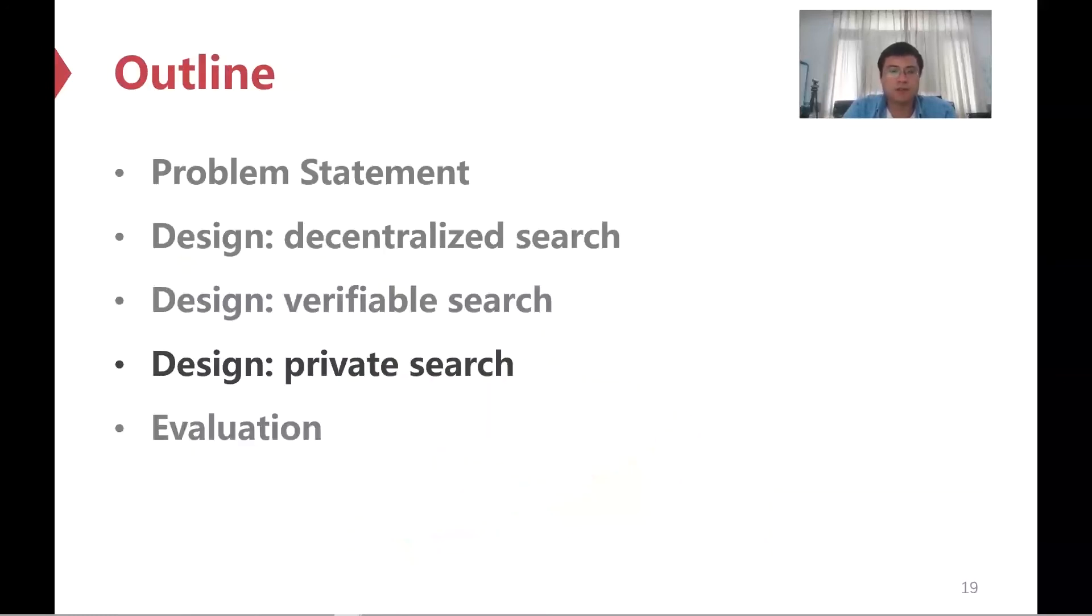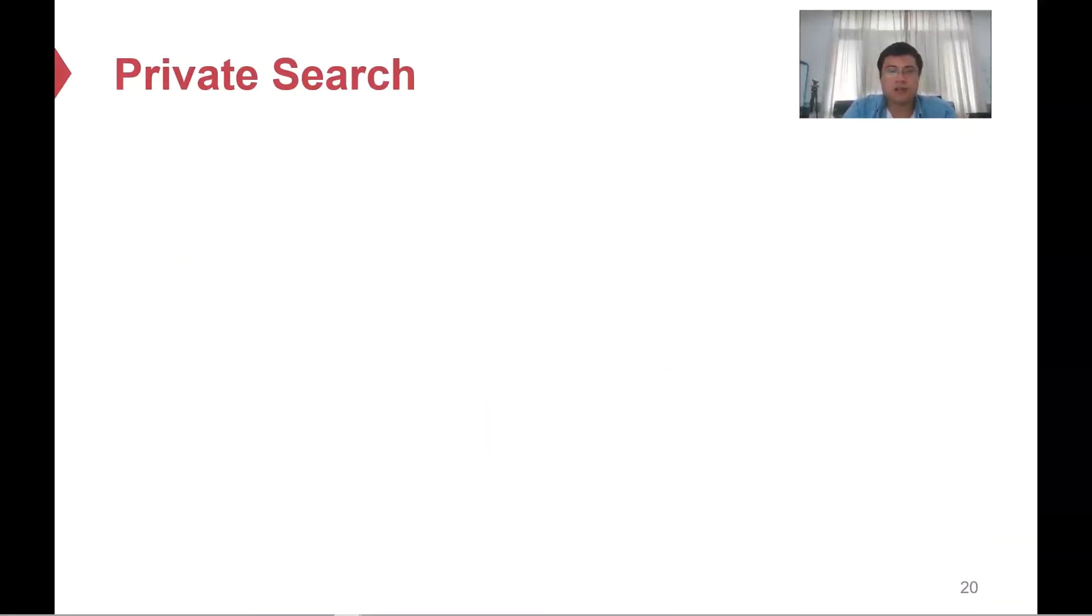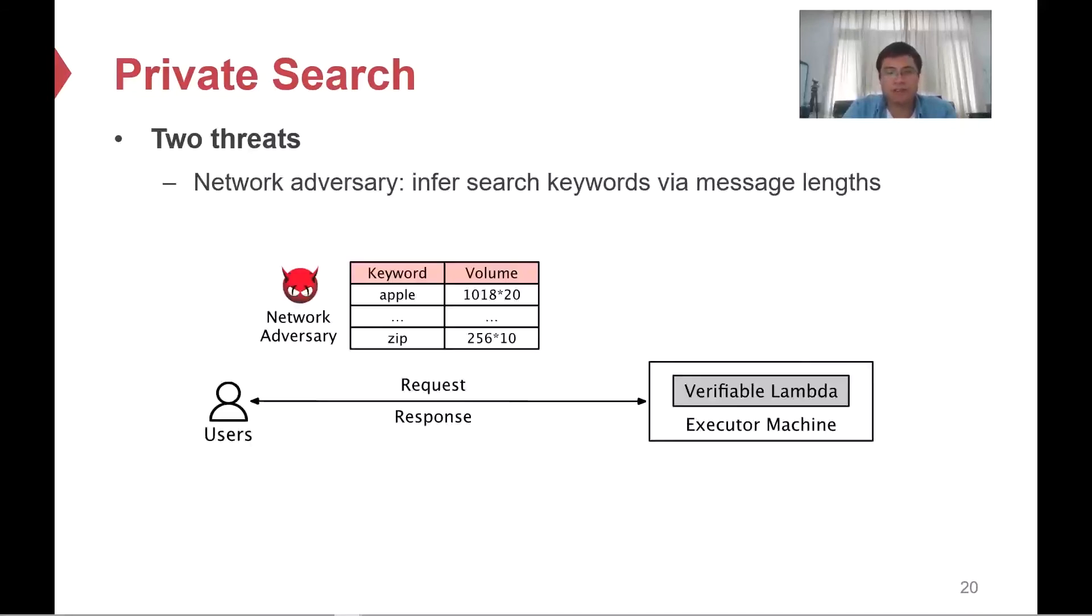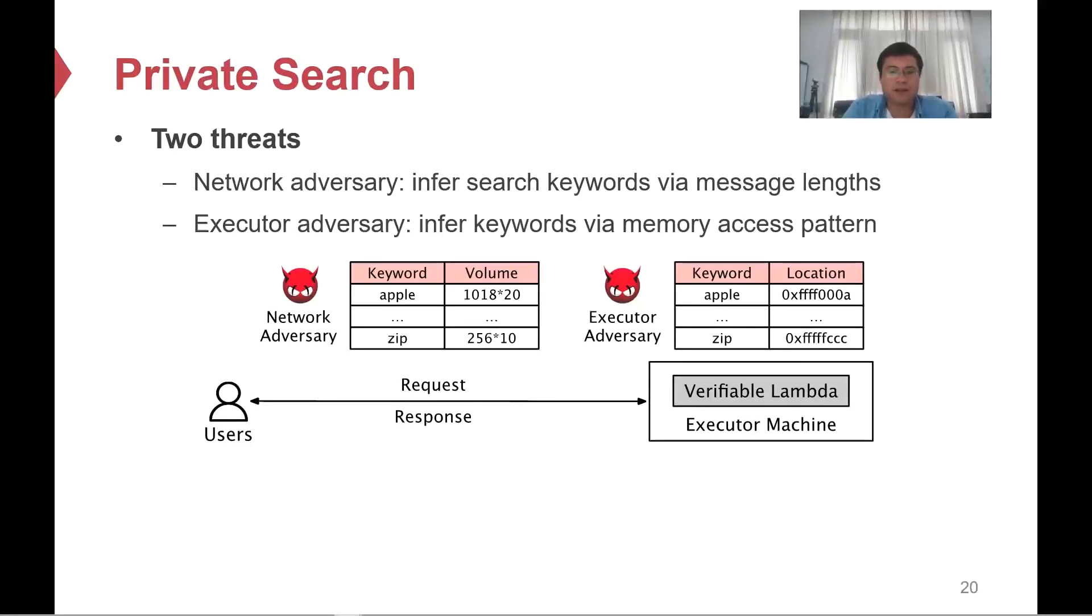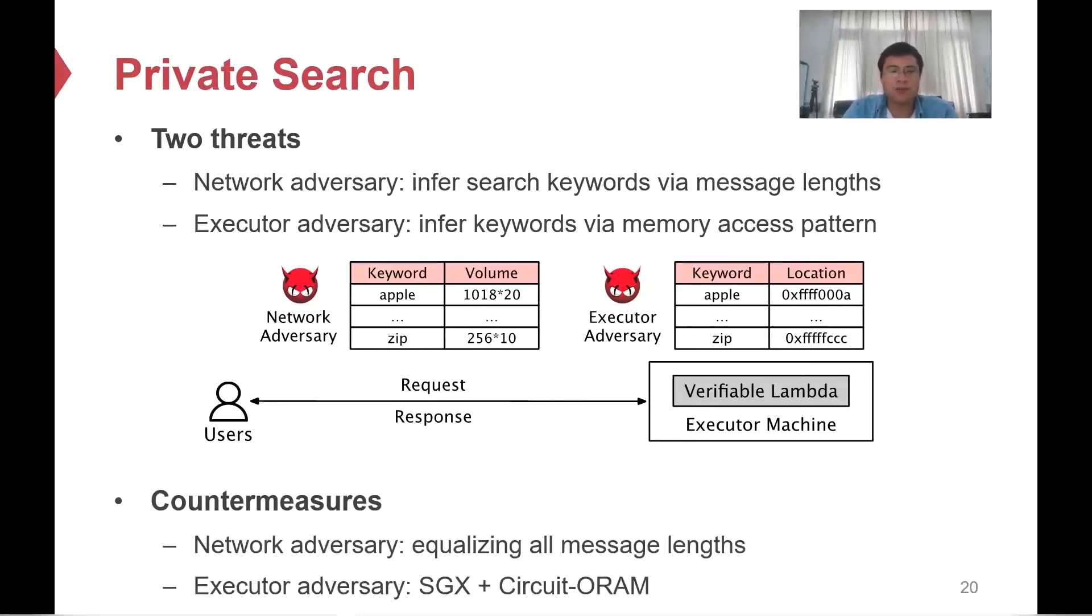Now, let us discuss how D-Search addresses privacy issues. Indeed, SGX has already isolated the search function from the rest of the system, so we might hope that SGX can provide private search. However, there exist two types of threats. First, a network adversary can eavesdrop on the communication channel between users and queriers. By monitoring the number of packets and their message length, the adversary can infer keywords, because different keywords have different lengths of results. Second, an executor adversary can observe memory access patterns to infer keywords. Specifically, he can enumerate all possible keywords to construct a dictionary that maps the keyword to a memory location. Afterwards, he can learn what users search by observing user memory access. Our countermeasures to network adversaries are to equalize all message lengths. And for executor adversaries, we use existing ORAM schemes to make sure every search triggers a different memory access path.